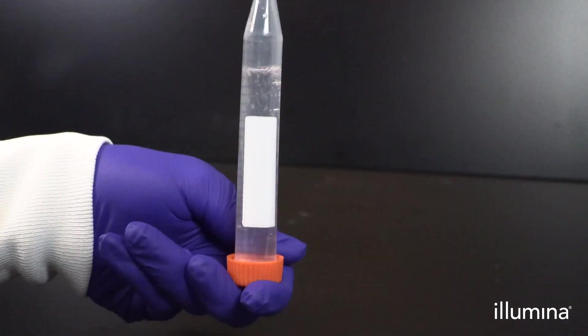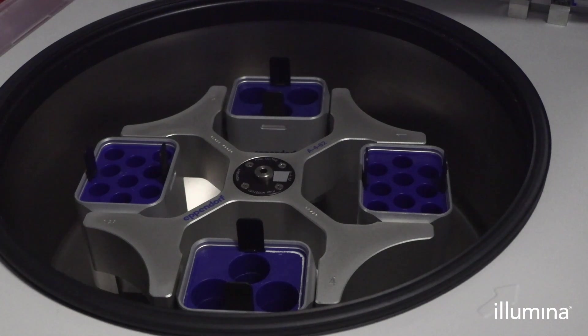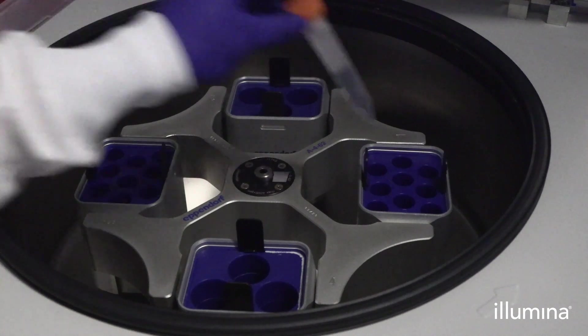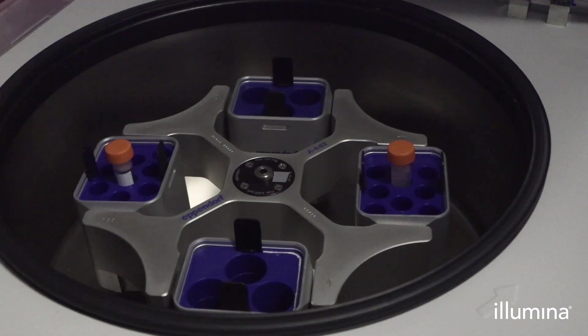Gently mix each tube by tapping the bottom to disperse the pellet and invert 10 times. Load the 15 ml tubes into a swinging bucket rotor centrifuge and spin for 2 minutes at 750 xg. Be sure to have braking set for 70-80% of maximum to avoid disruption of the pips pellet.